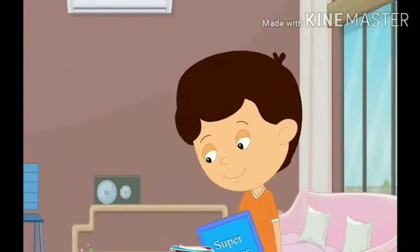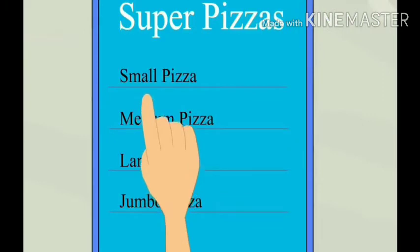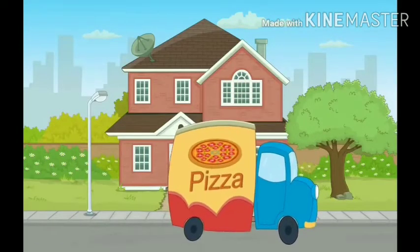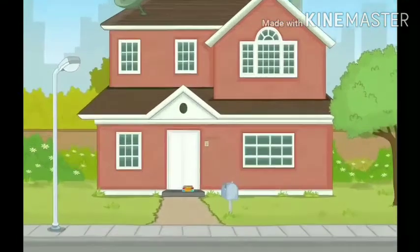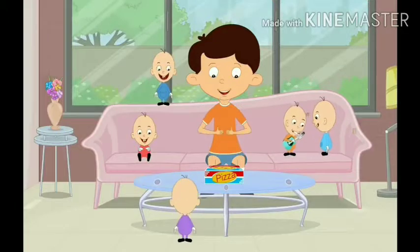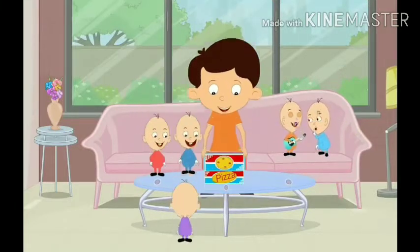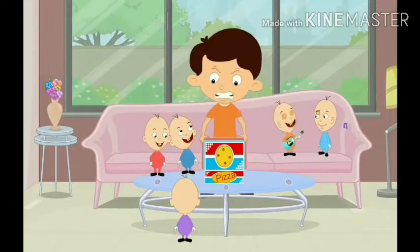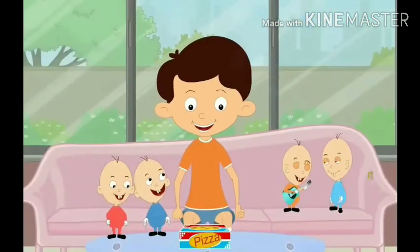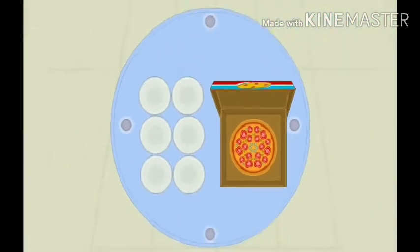They decided to order one more pizza. He ordered a large pizza, and again the delivery boy came and gave the pizza to the man. Now they had one pizza again, and the man decided to give equal parts to everyone. They had five children and one man himself, so he decided to distribute equal parts among all six.